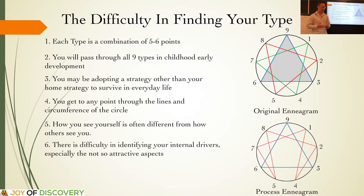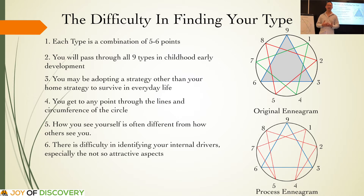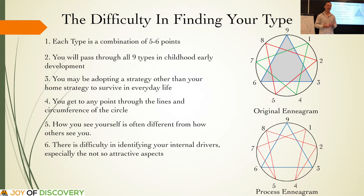There is also a great difficulty in identifying your internal drivers, especially the less attractive aspects. As you read type descriptions, you may encounter parts of your type that you don't wish to be identified with. It may be easier to identify with another type because sometimes it's too raw when you read some of the content. It kind of exposes vulnerabilities which you may not be aware of or not want to acknowledge in yourself, and that makes it harder to identify your home type.